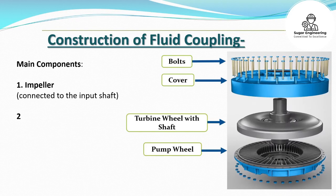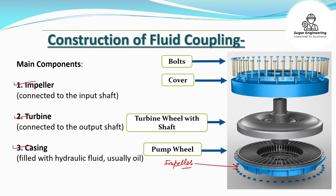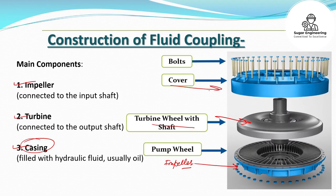Here we will discuss the main components of the fluid coupling. Generally, there are three main components. The first one is the impeller, the second is the turbine, and the third is the casing. This is the impeller, also known as the pump wheel, and it is connected to the input — it can be connected to a motor. The second one is the turbine wheel, which is connected to the output shaft and contains the turbine blades. The third one is the casing, which is filled with hydraulic fluid — generally we use oil. The bolts are used for the assembly of all three components.